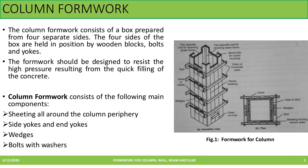The first one is Column Formwork. As shown in the figure, column formwork consists of a box prepared from four separate sides. The four sides of the box are held by wooden blocks, bolts and yokes. Formwork should be designed to resist the high pressure resulting from the quick filling of concrete. The main components of column formwork are sheeting all around the column periphery, side yokes and end yokes, wedges and bolts with washers.